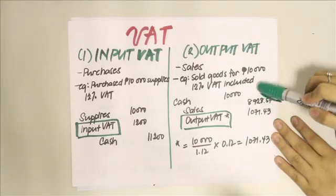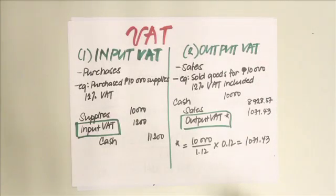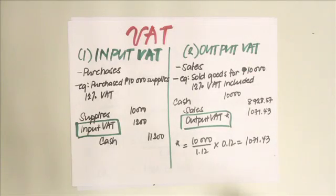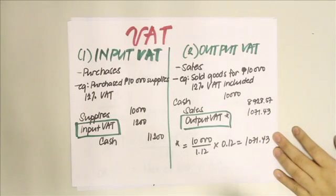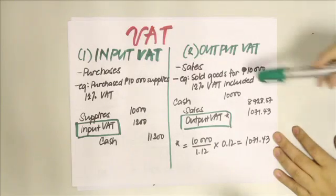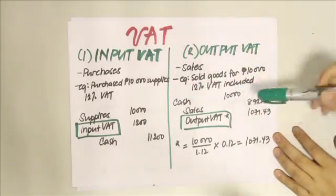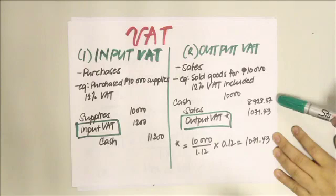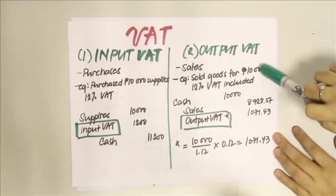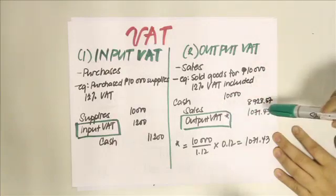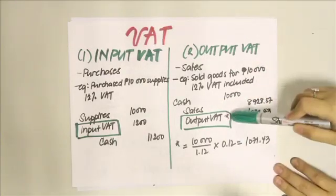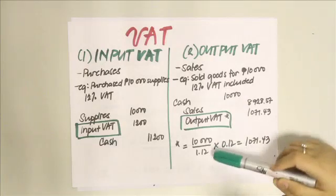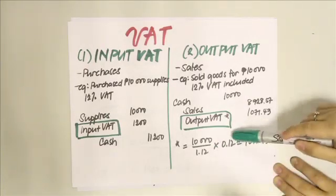For output VAT, if you sold goods for 10,000 pesos inclusive of 12% VAT, that 10,000 is already the total of sales plus VAT. You debit cash for 10,000, credit sales for 8,928.57, and credit output VAT for 1,071.43 — which you get by dividing 10,000 by 1.12 and multiplying by the 12% VAT rate.